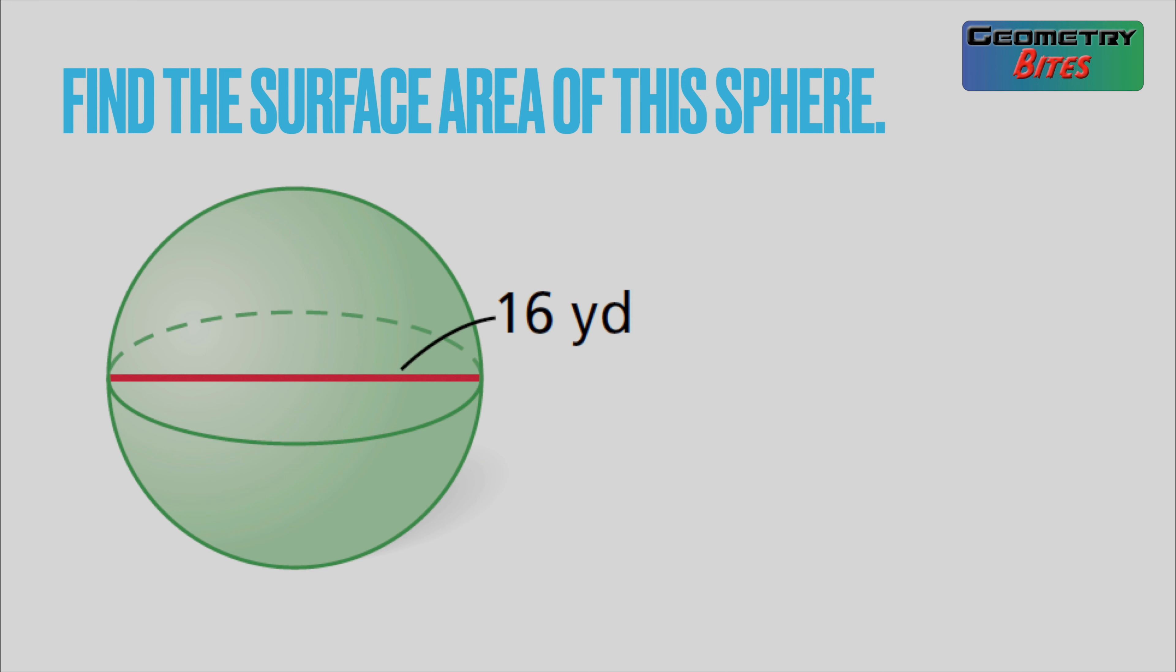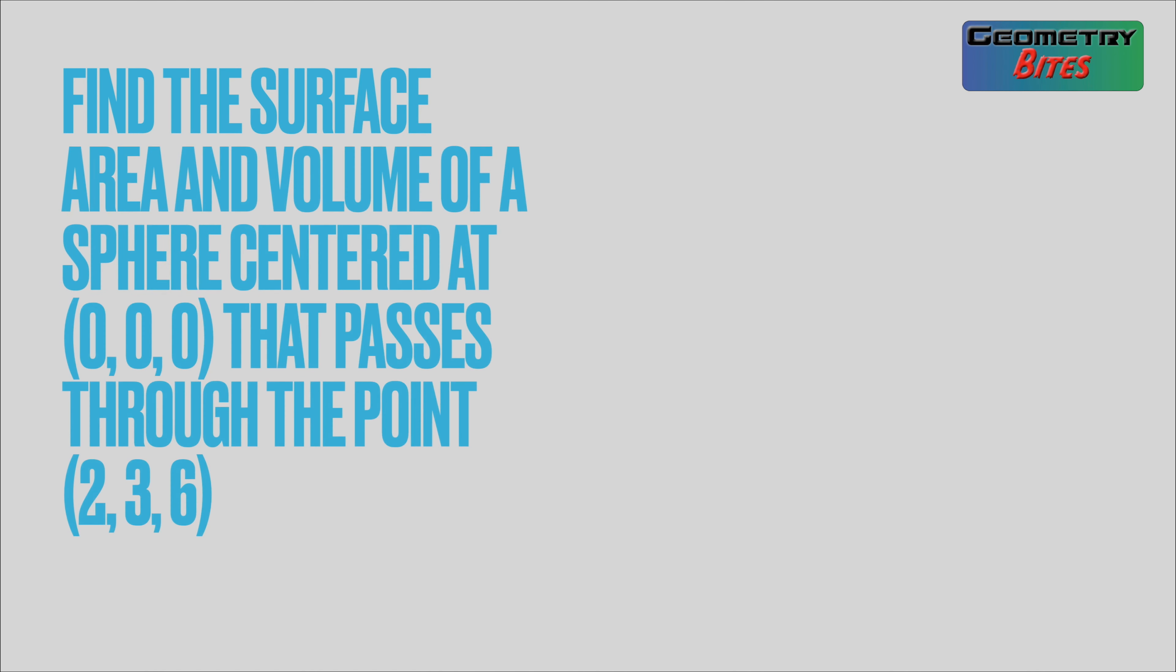All right, let's find the surface area of the sphere. First thing, remember it is basically 4 times π r². In this case the radius is half of 16, so 8. This becomes 4 times π times 64. 4 times 64 is 256π square yards.